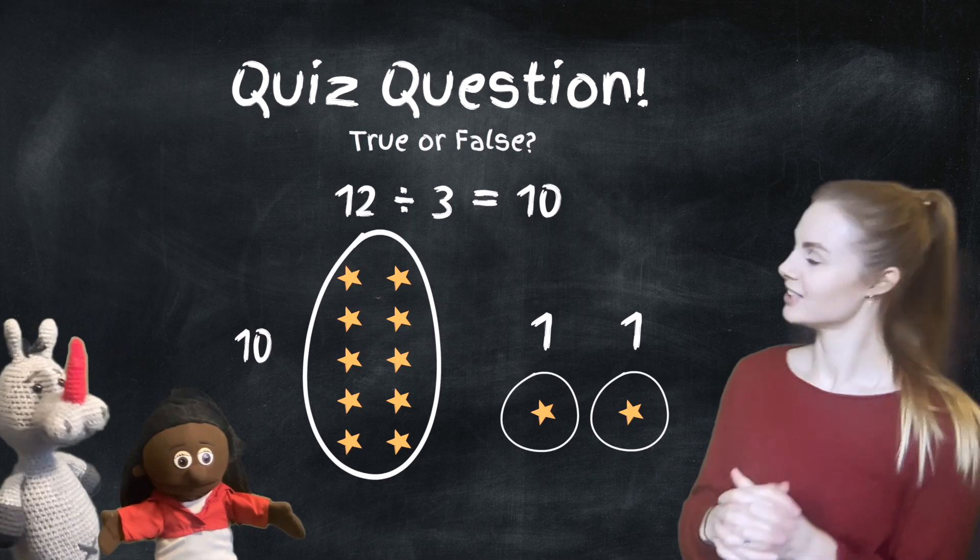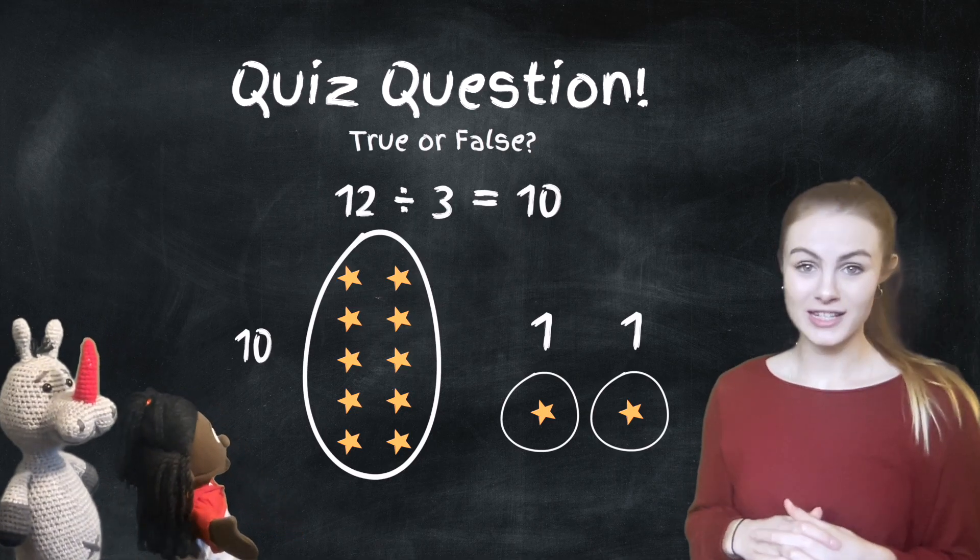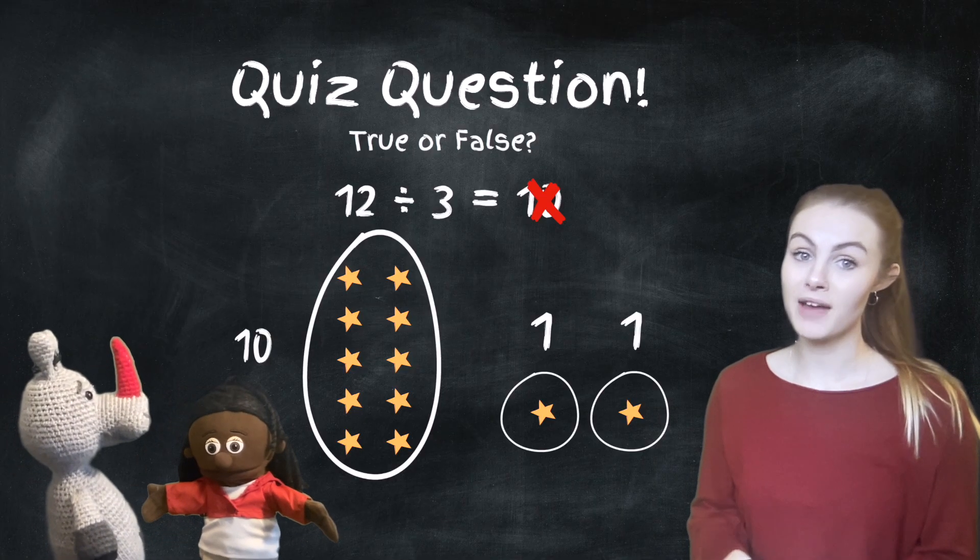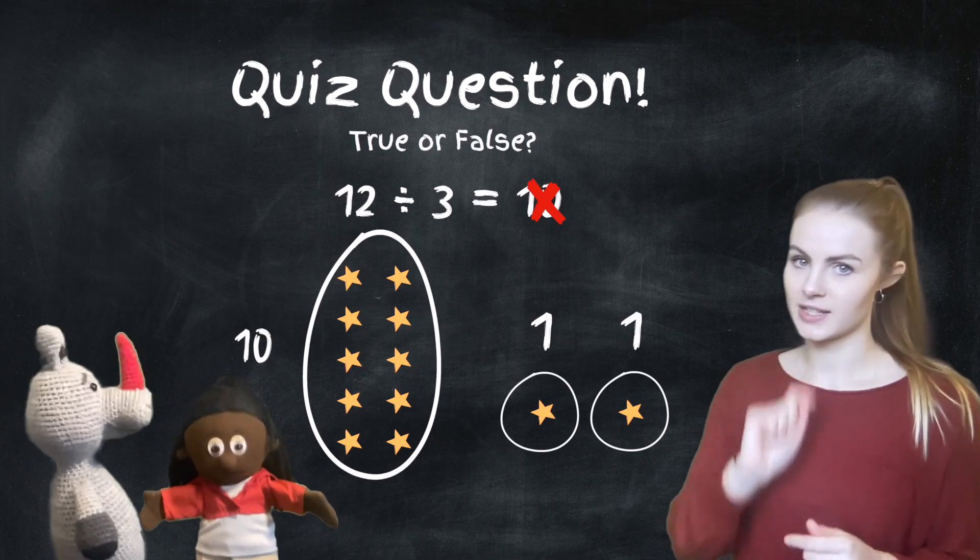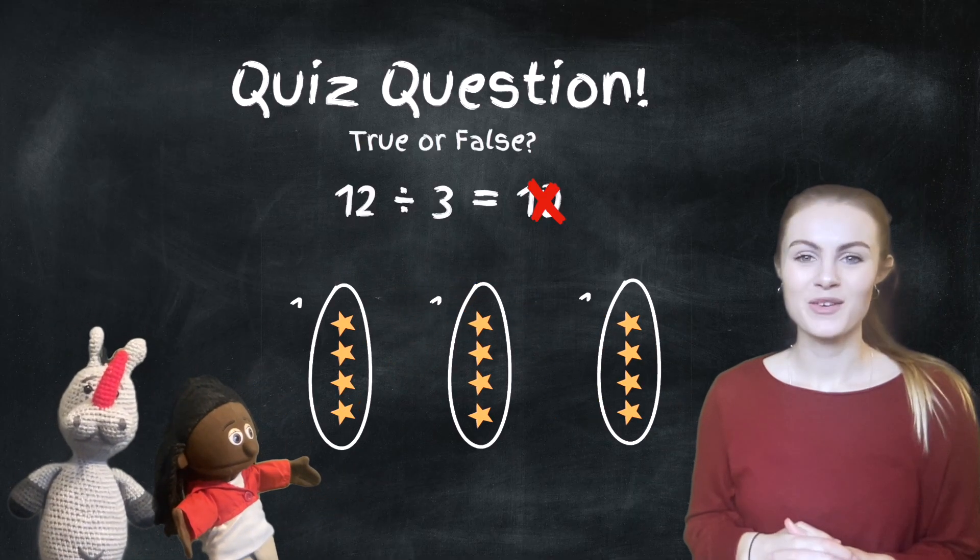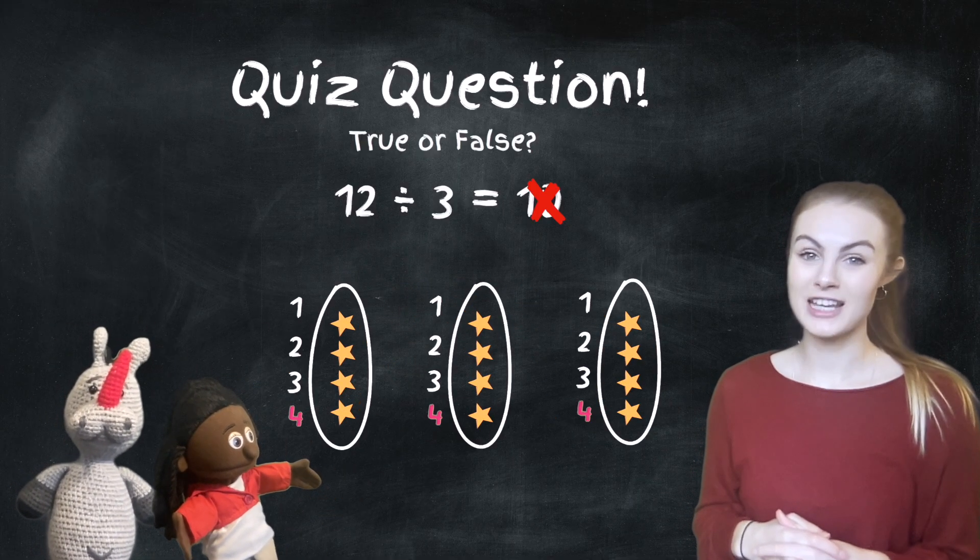Welcome back. Let's have a look. Yeah, it's false, isn't it? Because we haven't shared them into equal groups. And to do division by sharing, we need to put them in equal groups. Let's fix it. Fab. We can see that 12 divided by 3 is actually 4.